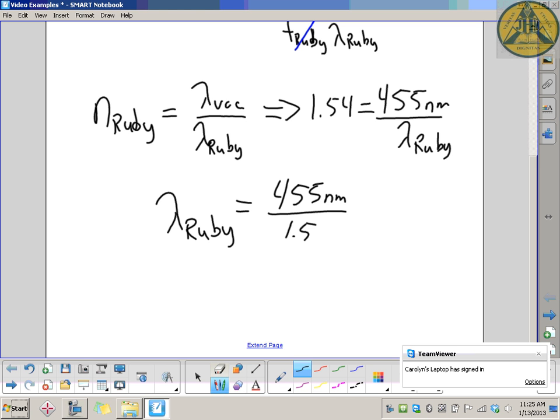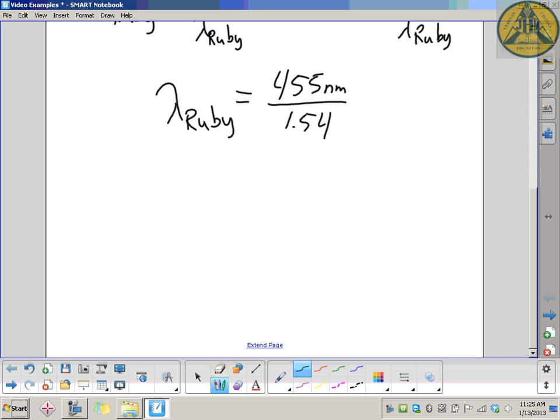We should always get a value less than what it is in a vacuum. The vacuum is always the maximum speed and maximum wavelength you could have for light. Let me do that division: 455 divided by 1.54. The wavelength of blue light once it enters ruby and slows down works out to be 295 nanometers.